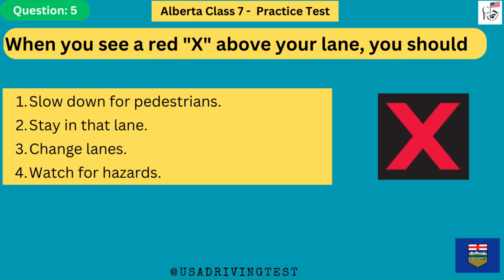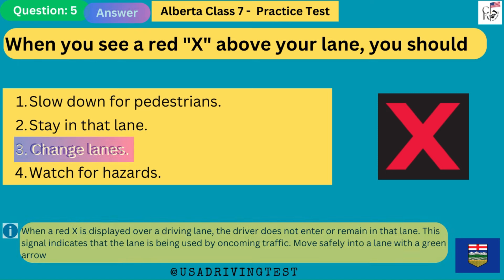When you see a red X above your lane, you should: 1. Slow down for pedestrians. 2. Stay in that lane. 3. Change lanes. 4. Watch for hazards. The answer is 3: change lanes. When a red X is displayed over a driving lane, the driver does not enter or remain in that lane. This signal indicates that the lane is being used by oncoming traffic. Move safely into a lane with a green arrow.